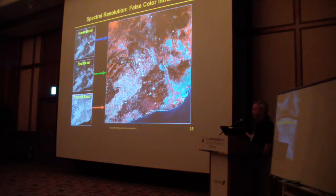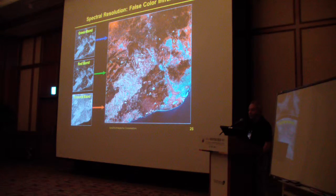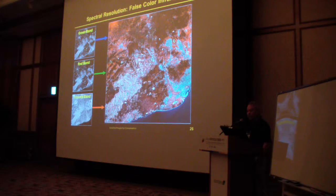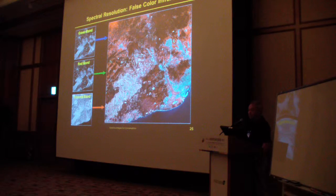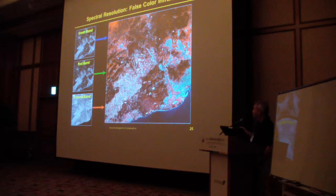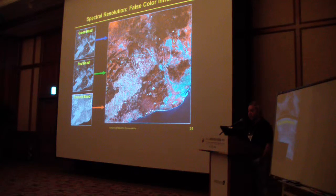By far, more images are made in false color. We can arbitrarily assign blue, green, and red to any spectral bands and make images that have no bearing to the color your eye would see, but the information is what's important. The various shades of red relate to the health and vigor of the vegetation, and you cannot get this easily in other parts of the spectrum, like the blue or the green bands.